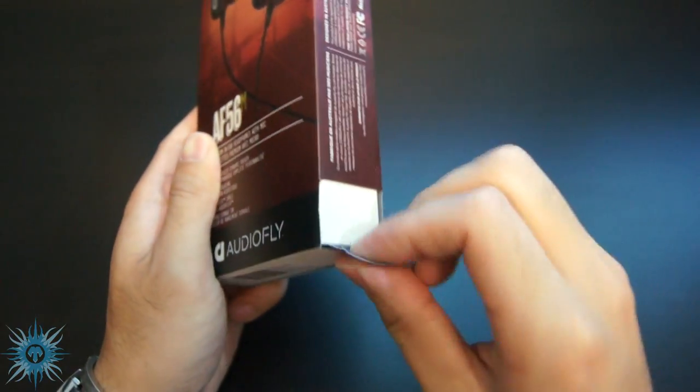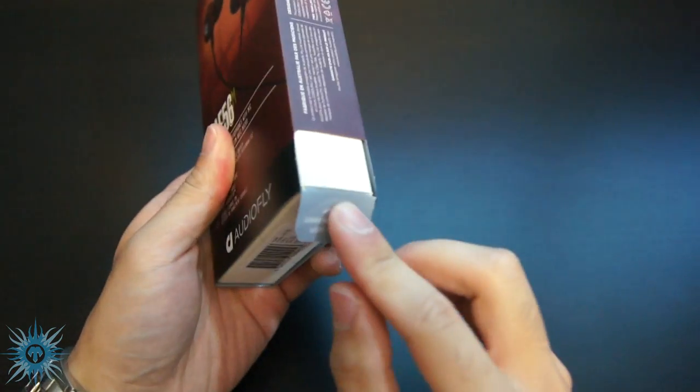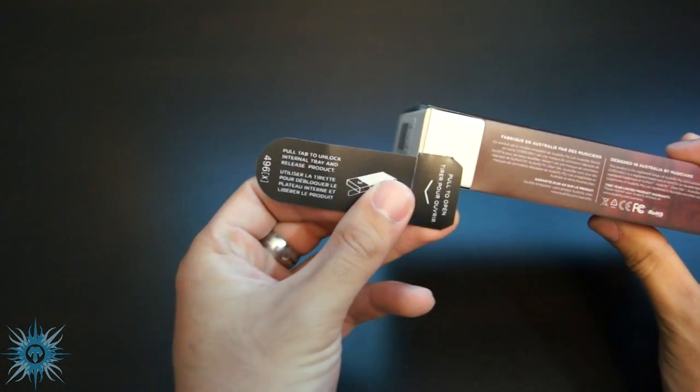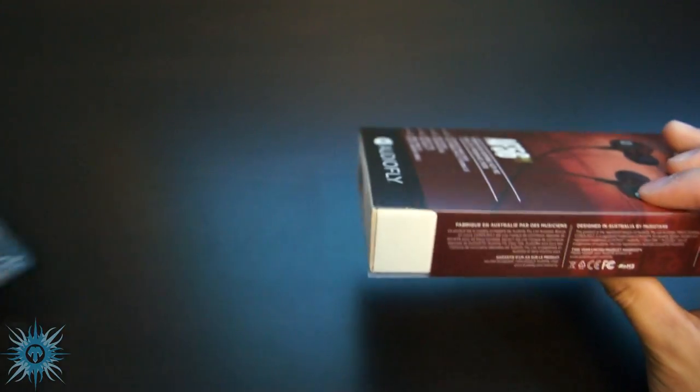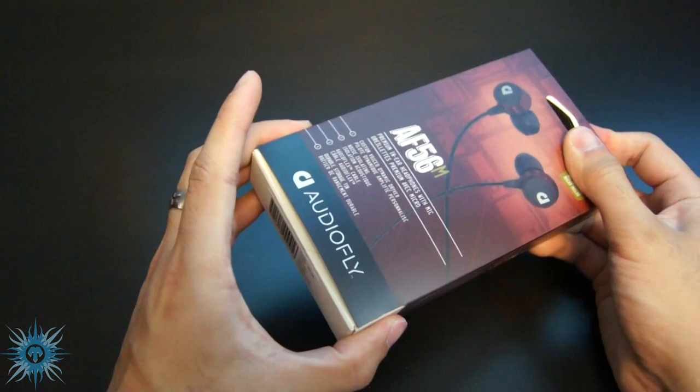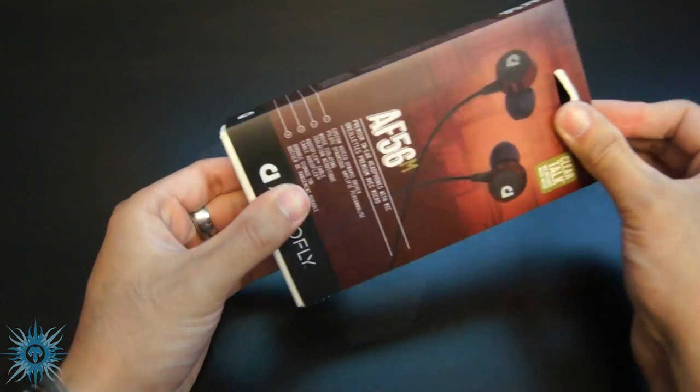So onto the unboxing, you just pull the tab on the corner down and rip it off, and once that's done, there's further instructions of there being a second tab to unlock the tray and release the product. And I obviously didn't read those instructions, as it took me quite a bit of time to realize the second tab was preventing me from pushing the box down, and it only comes out through the top.